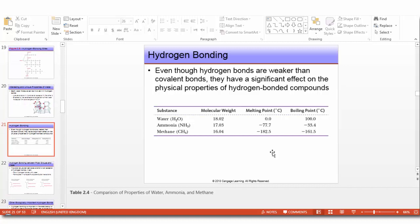Even though hydrogen bonds are weaker than covalent bonds, they have a significant effect on the physical properties of hydrogen bonded compounds. For example, if we compare three molecules - water, ammonia, and methane - all of them have close molecular weights, but we see differences in melting and boiling points.